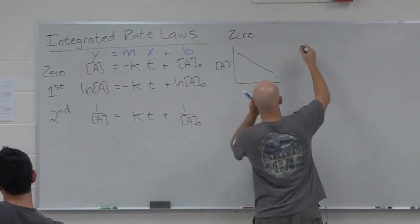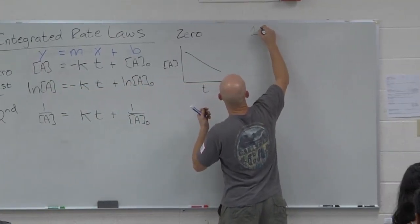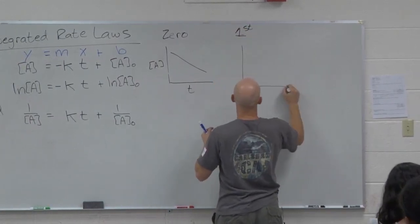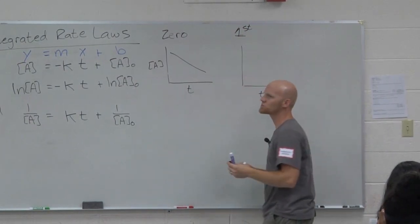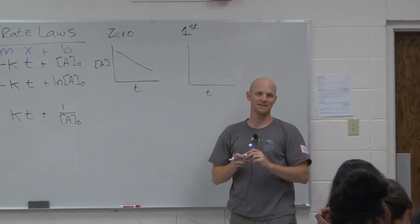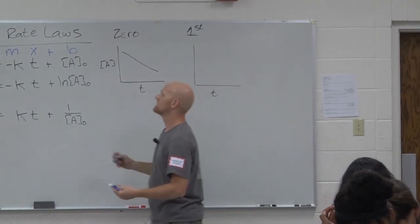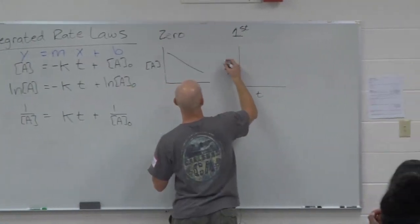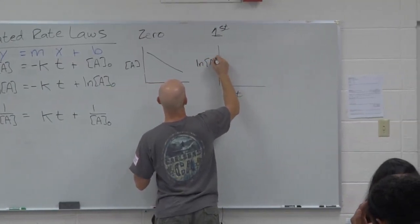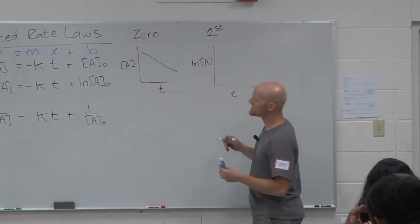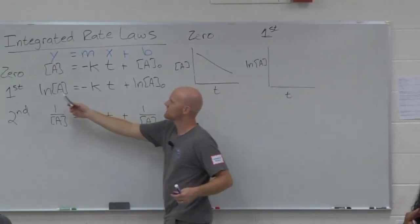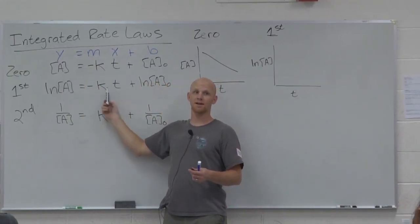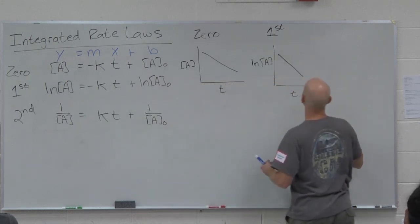So let's look at the first order plot as well. Still plotting time on the x-axis, what do we need to plot on the y-axis now to get a straight line? Now it's got to be the natural log of A on the y-axis. So in this case, what's my slope going to be equal to for the first order plot? Also negative k again. Another negative slope. It's a downhill slope.